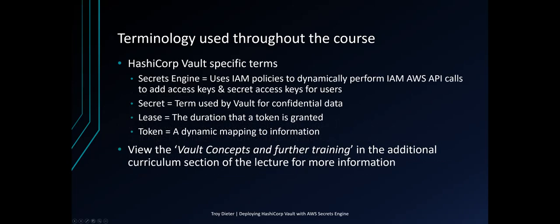We're going to have some HashiCorp Vault-specific terms as well, which include the Secrets Engine, which uses IAM policies to dynamically perform IAM AWS API calls, add access keys and secret access keys for your users. Secret is a term used by Vault for confidential data.